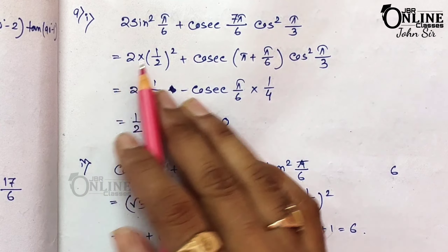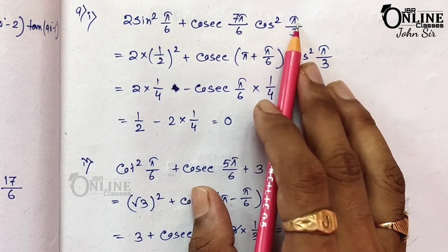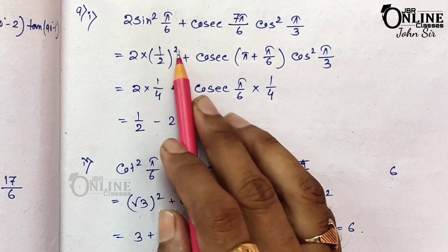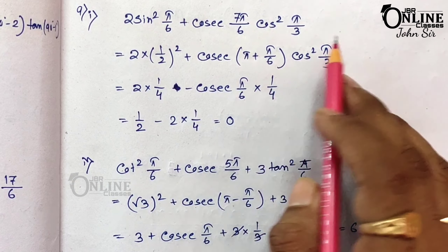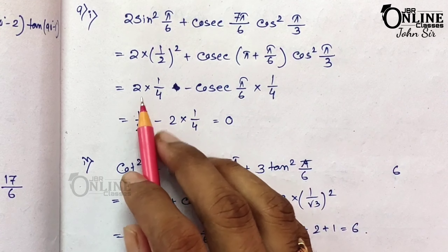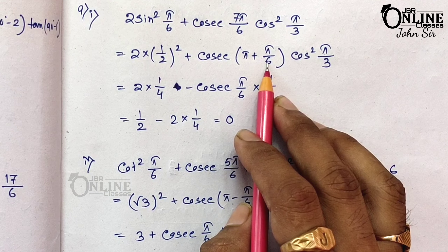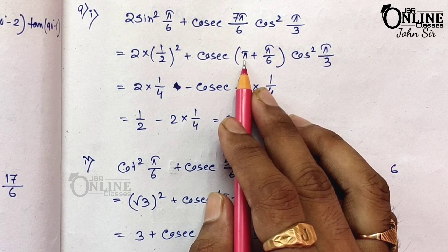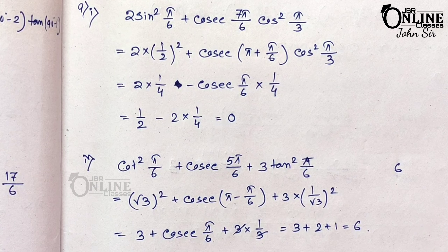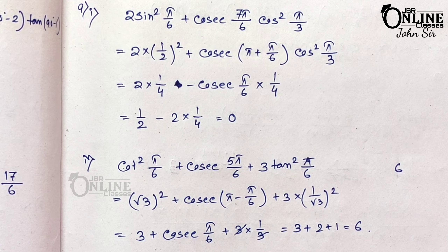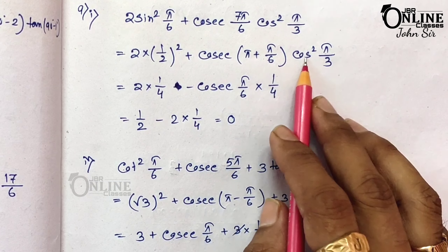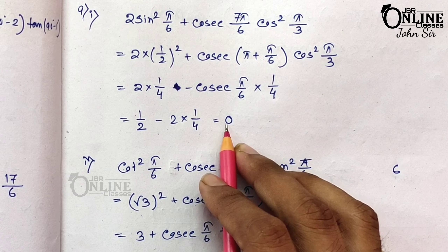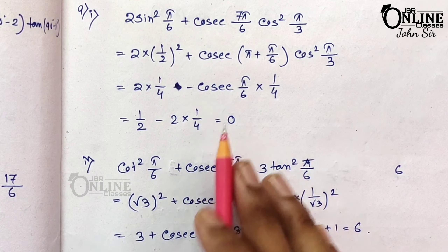Problem 9.1: Prove that 2sin²(π/6) + cosec(7π/6)·cos²(π/3) = 0. sin(π/6) = 1/2, so 2·(1/2)² = 2·(1/4) = 1/2. cosec(7π/6) = cosec(π + π/6): since π+something is third quadrant where cosec is negative, this equals −cosec(π/6) = −2. cos²(π/3) = (1/2)² = 1/4. So: 1/2 + (−2)·(1/4) = 1/2 − 1/2 = 0. Proved.